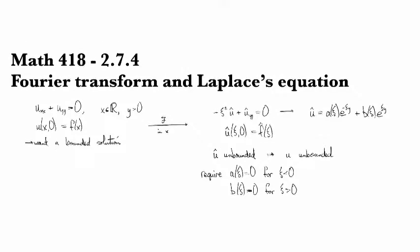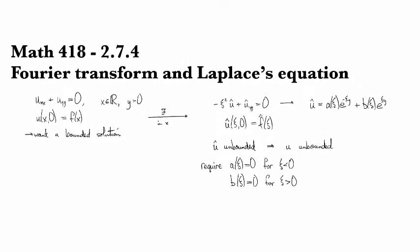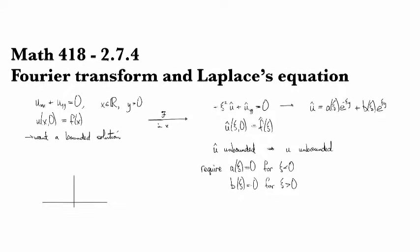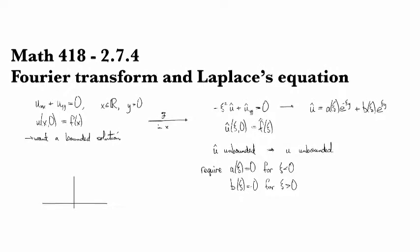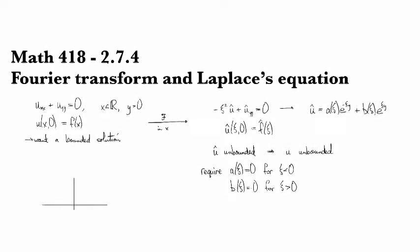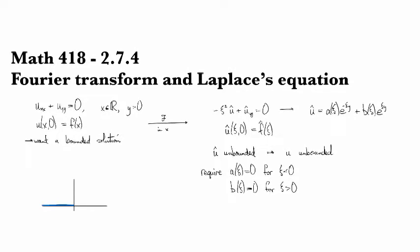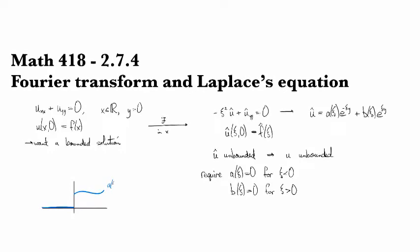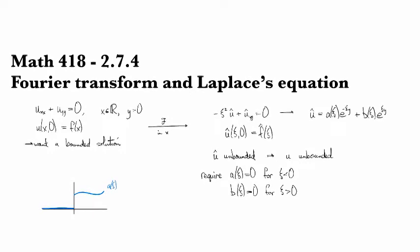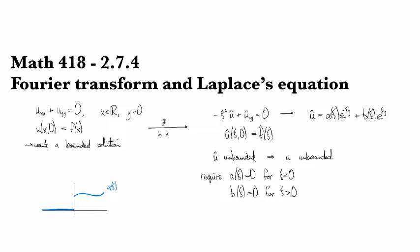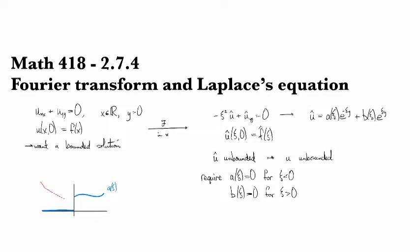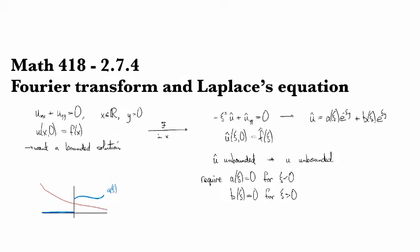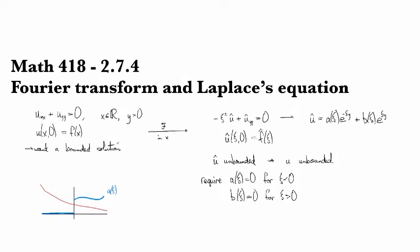So let me draw, see if I can draw a picture here of the sort of situation that we're looking at. So suppose we have some function a and we require it to be zero on the left, and then it can be like whatever the heck it wants. So there's a portrait of a.